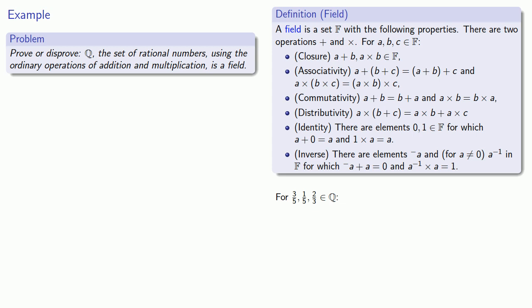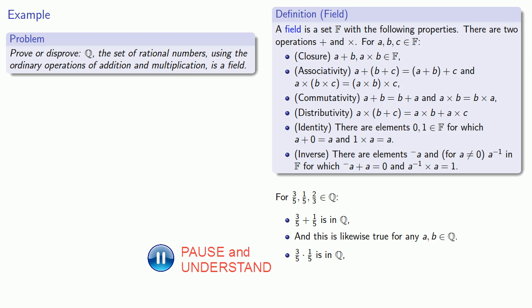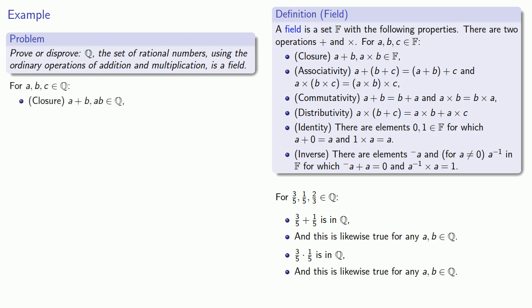And the first thing we notice is that three-fifths plus one-fifth is in Q. It is a rational number. And if we think about this, this will actually extend to any two things that are rational numbers. Similarly, three-fifths times one-fifth is also a rational number. And so we conclude that our set Q is in fact closed under our operations of addition and multiplication.